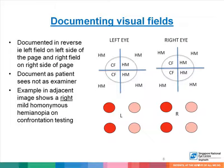When documenting visual fields, it is important to remember to document in reverse — the left field is documented on the left side of the page and the right field on the right side of the page. Document as the patient sees, not as the examiner. An example shown here is a right mild homonymous hemianopia, where the patient can only count hand movements on the right side and has red desaturation on the right side of the visual field.